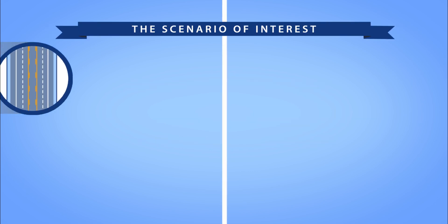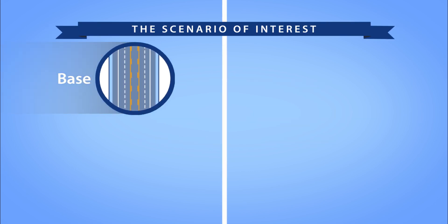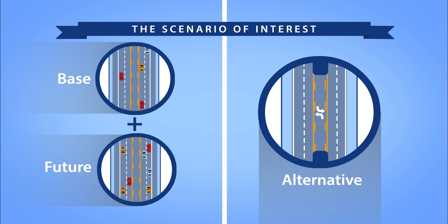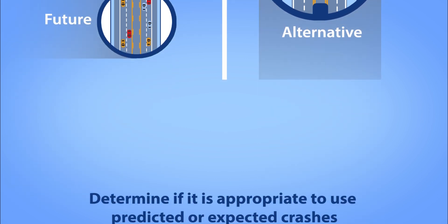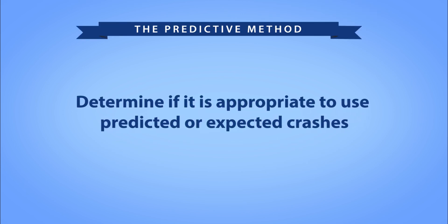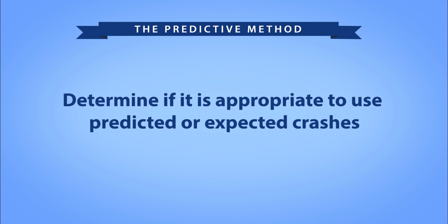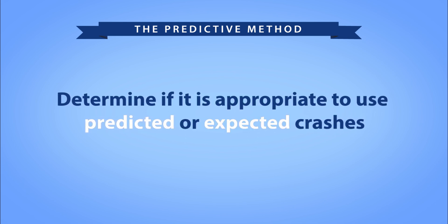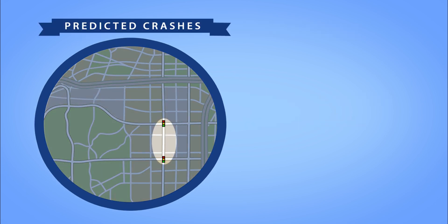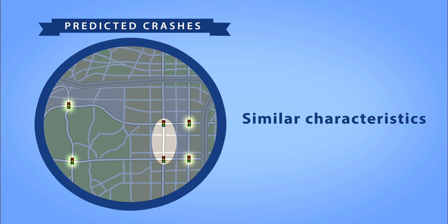This will impact data requirements and the extent of your analysis. For example, your objective may be to estimate the long-term average safety performance for existing roadway conditions, also known as base conditions, combined with the current and/or future traffic conditions for comparison with an alternative that incorporates some changes to the roadway geometrics and/or operations. Depending on your needs, you will need to decide if it's appropriate to produce results in terms of either predicted or expected crashes. Predicted crashes are based on the average annual safety performance of other sites with similar characteristics to the site of interest.